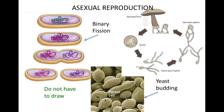With asexual reproduction, you only need one parent. For example, here we have one bacterium that is duplicating its own DNA and splitting into two. So it's just creating clones of itself.